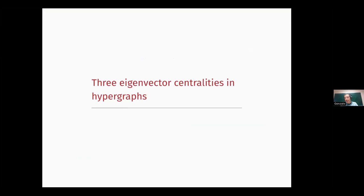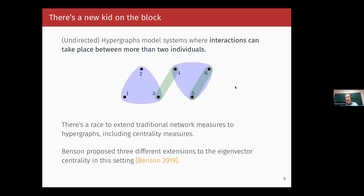So this is the story for standard graphs. Now, what happens in hypergraphs? Hypergraphs are the new toy that everyone wants to explore. They model systems where interactions take place between more than two individuals. A lot of people are trying to extend what has been done in networks to the context of hypergraphs. Benson proposed an extension of the eigenvector centrality to this setting, and I'm going to tell you about it now.